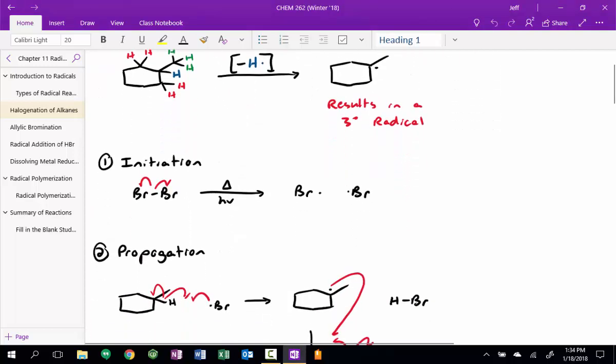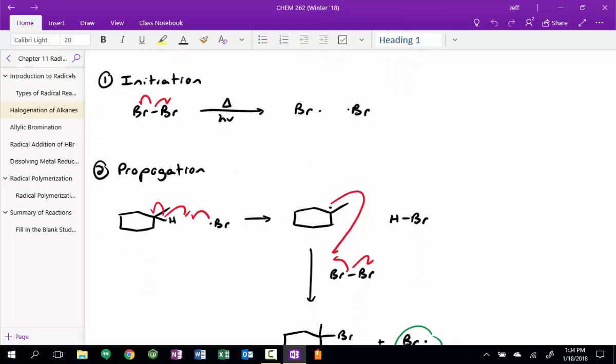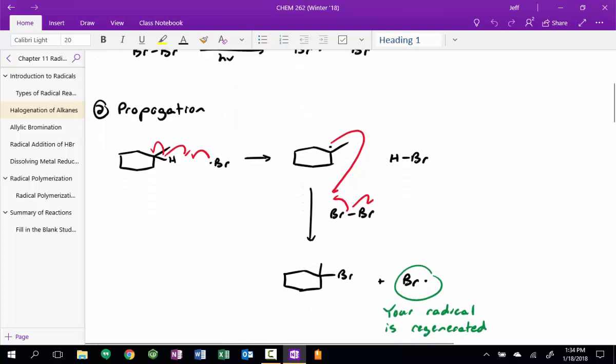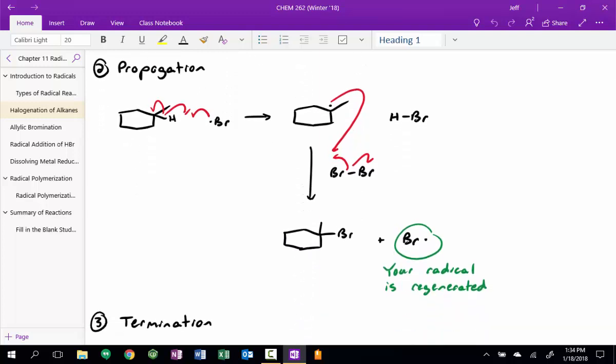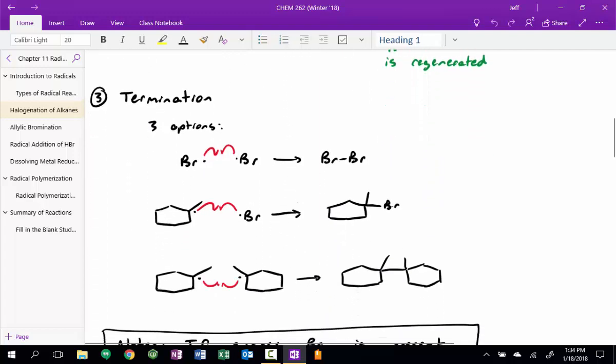We said the steps are broken down into three components. First step's initiation, where you break a bond and form radicals. Second step's propagation, where you start off with a radical, and then you regenerate that radical, and ideally this can go over and over again in a cyclic fashion until your reagent's completely used up. And then in the last step, you've got a termination, where you take two radicals, combine them, and you end up with a neutral organic or inorganic compound.